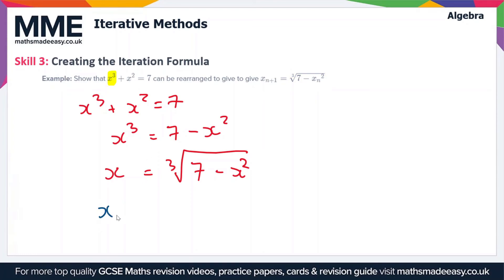All we've done here is change this so we've got xn plus 1 equals the cube root of 7 minus xn squared, and as you can see this is the exact same form as the one we're trying to make.